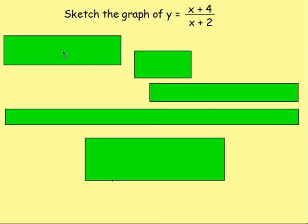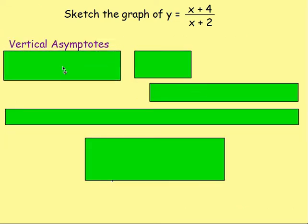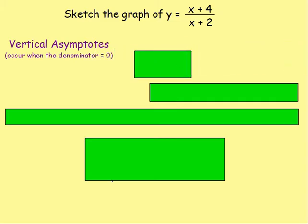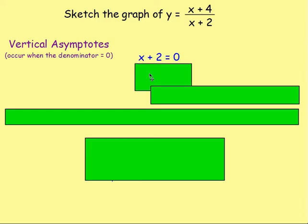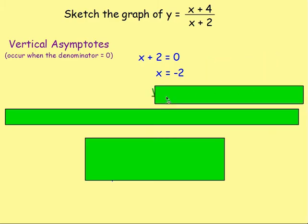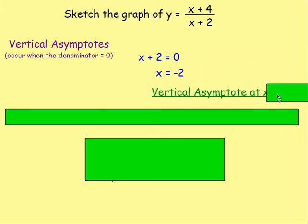We now need to think about our asymptotes. Looking at the vertical asymptotes first — they occur when the denominator equals zero. In this example, the denominator is X plus two, so X plus two equals zero, which gives X equals negative two. Therefore, there is a vertical asymptote at X equals negative two, and in your graph you're going to have a vertical line at X equals negative two.